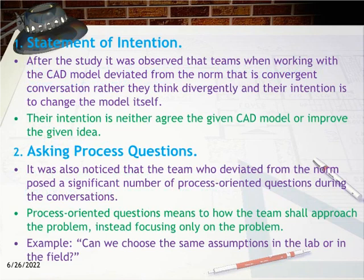Insight 1 — Statement of intention: After the study, it was observed that teams working with the CAD model deviated from the norm of convergent conversation. Rather, they think divergently, and their intention is to change the model itself — neither to agree with the given CAD model nor merely improve the given idea. Insight 2 — Asking process questions: It was also noticed that teams who deviated from the norm posed a significant number of process-oriented questions during conversations. Process-oriented questions address how the team shall approach the problem, instead of focusing only on the problem. Example: 'Can we use the same assumptions in the lab or in the field?'